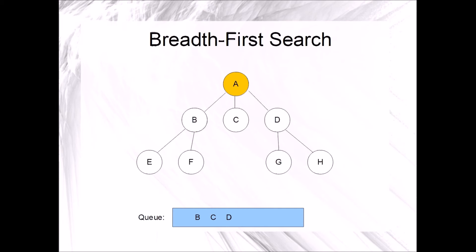Since the queue is not empty, we will begin another repetition. The next repetition begins by dequeuing B and marking it. Next, we'll enqueue all adjacent unmarked vertices. In this case, it will be vertex E and vertex F. This ends the next repetition of the algorithm.